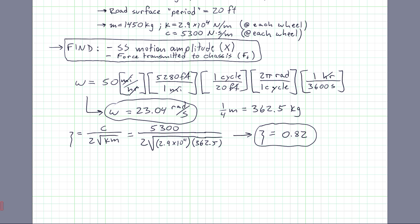What else do we need? We need a natural frequency. Natural frequency, that's square root of k over m. Assume at this point my mass is always going to be my quarter mass, that's what I'm focusing on. So 2.9 times 10 to the 4th, divided by 362.5. So I have a natural frequency of 8.94 radians per second.